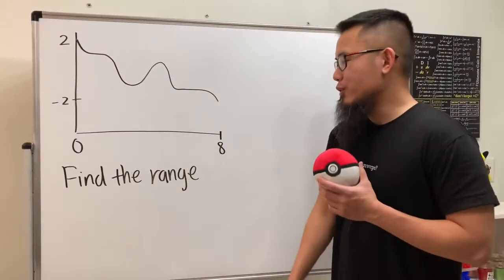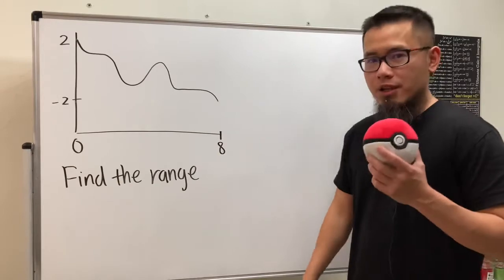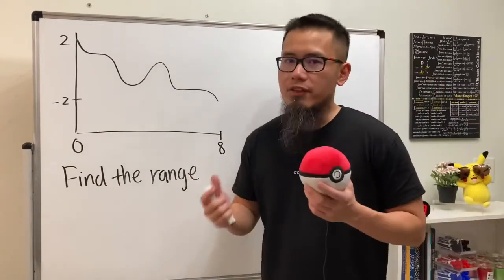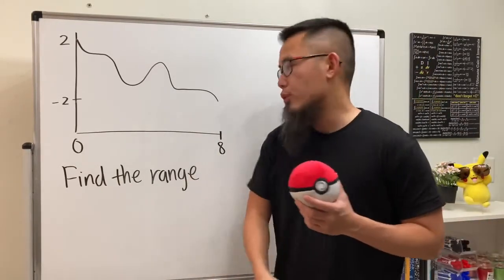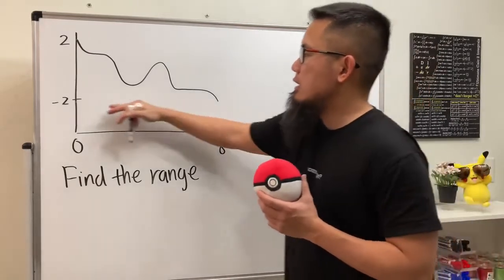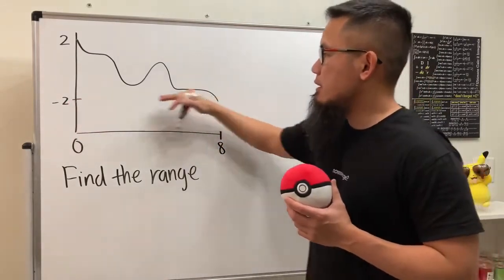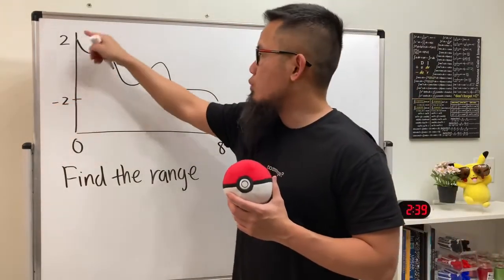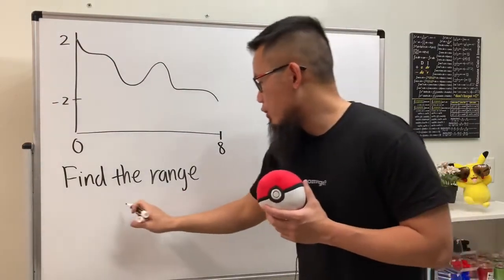Here we are given this graph and we're going to find the range of the function. Remember, the range is the set of all possible Y values. As you can see, the smallest Y value here is negative 2, and the biggest Y value is 2. Therefore, the range is just going to be